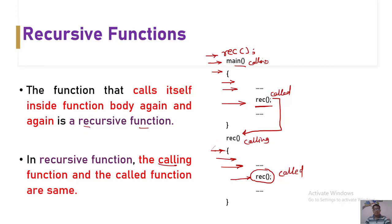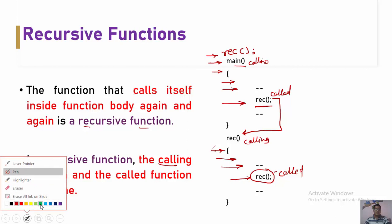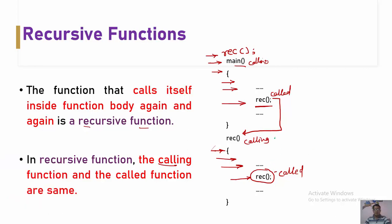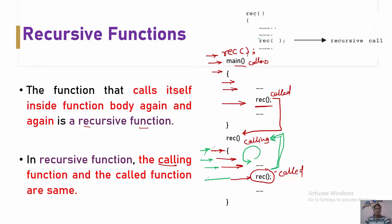The rec function is called again and again — it is in a repetitive loop. So calling the same function again and again within the definition of a function is called a recursive call. Inside the definition of this rec function, we are calling the rec function again.